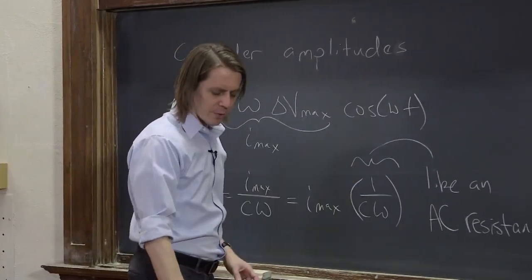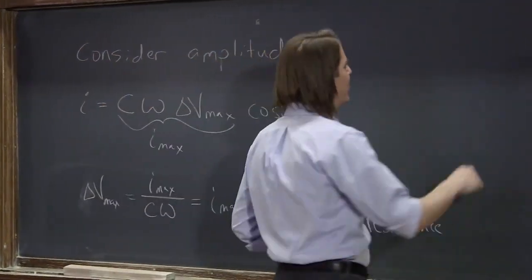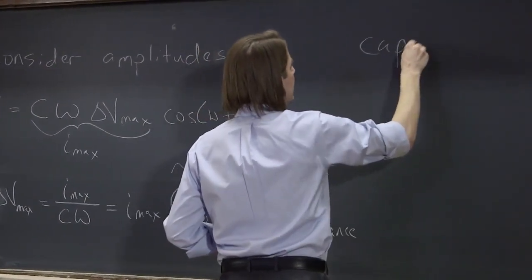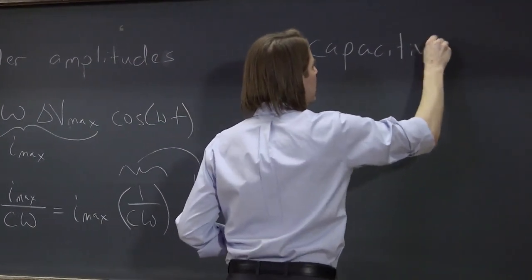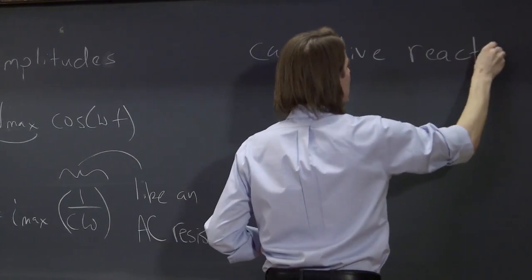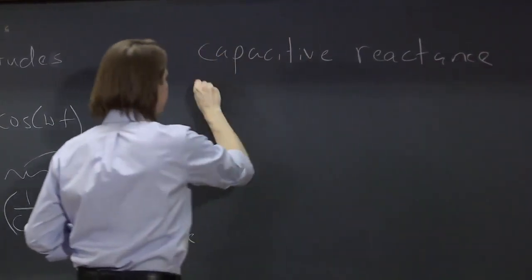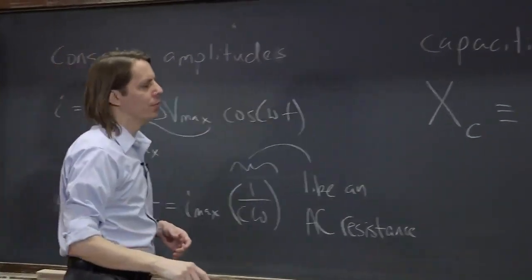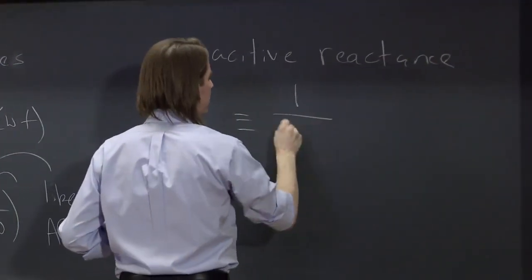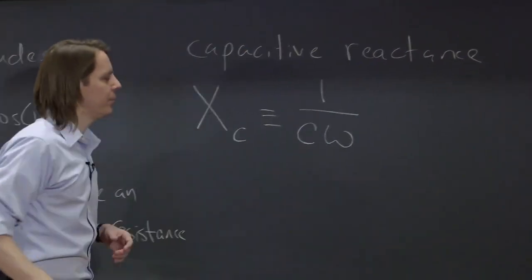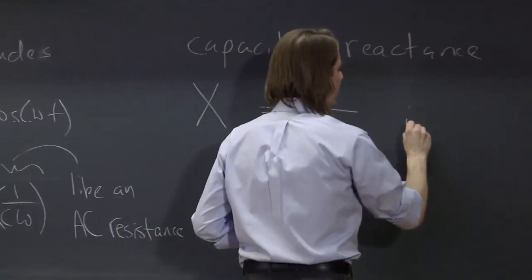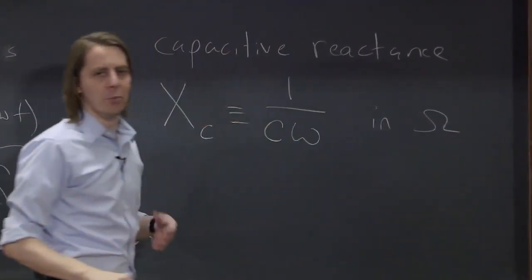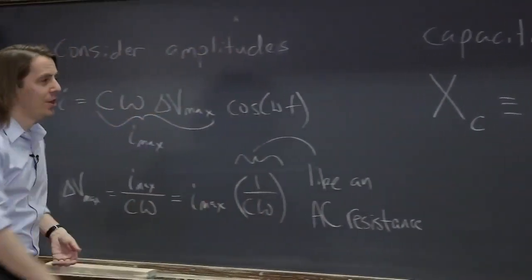So this thing that looks like a resistance, it has the units of resistance, we call it the capacitive reactance. And big X is the symbol. So Xc we define to be one over the capacitance times omega, which does end up having units of ohms. It is really a resistance; it really does work in this formula.